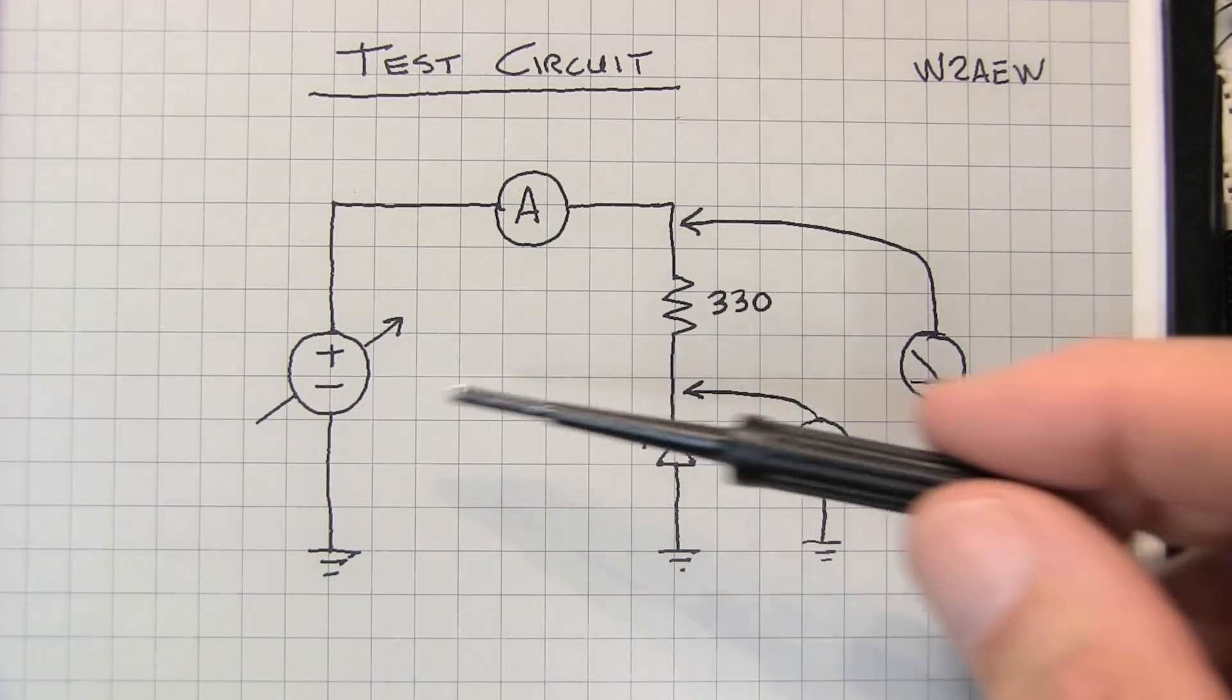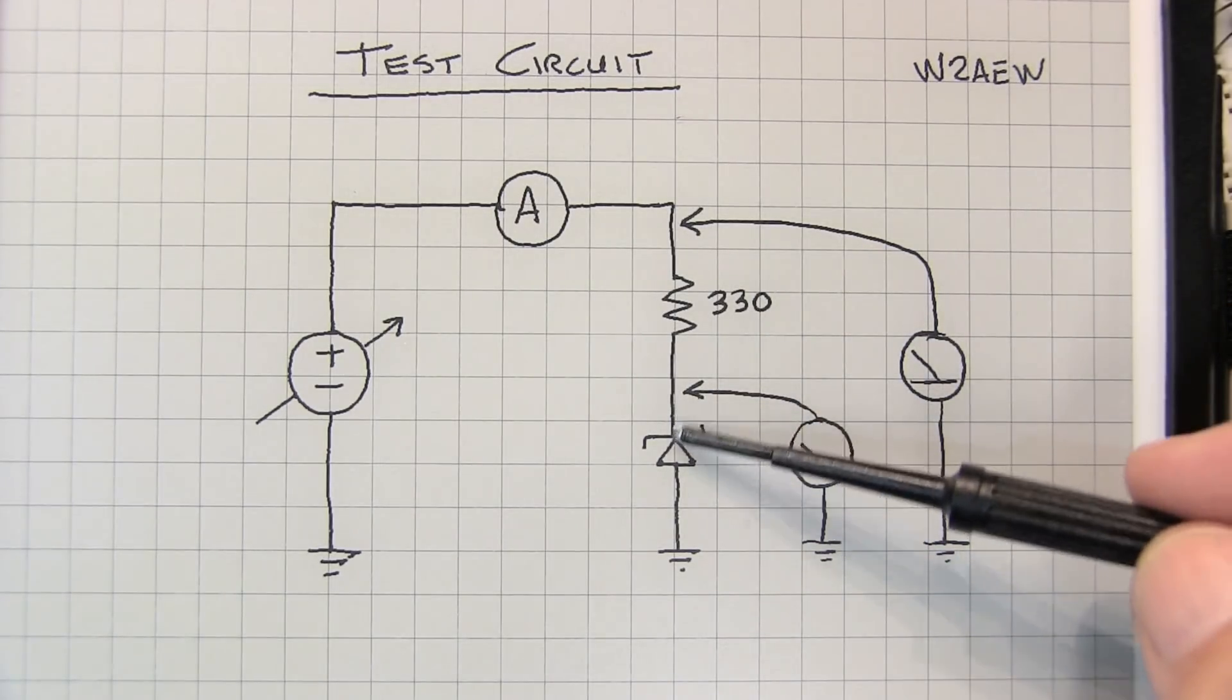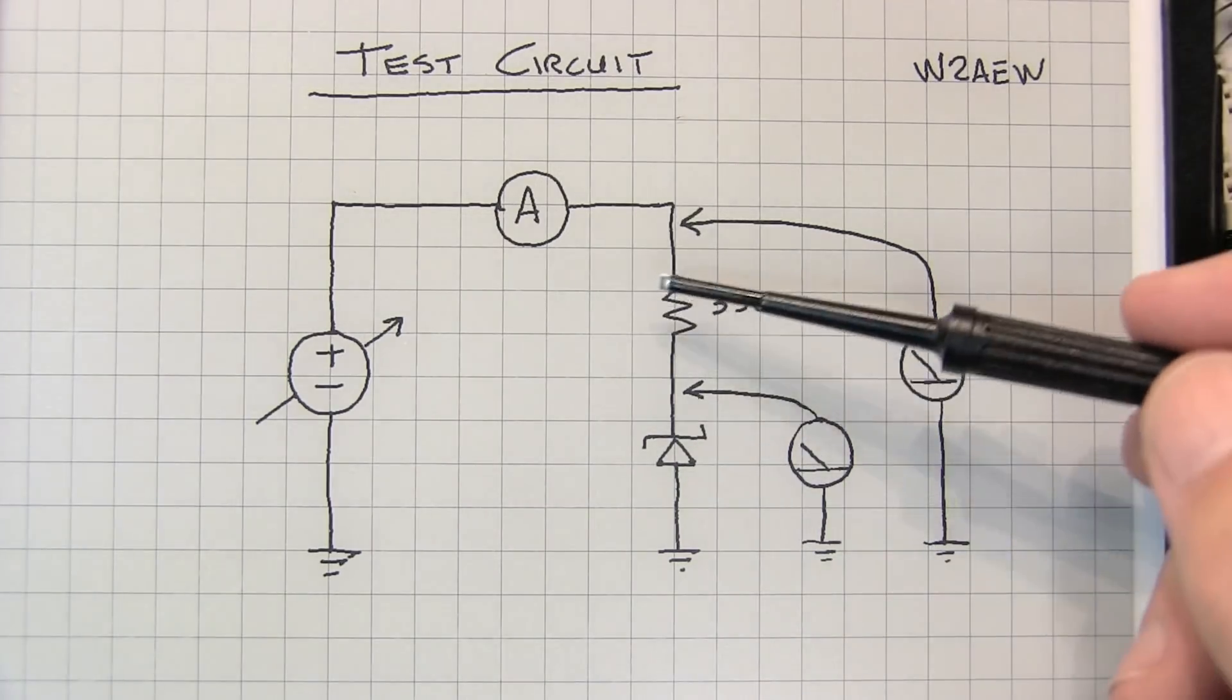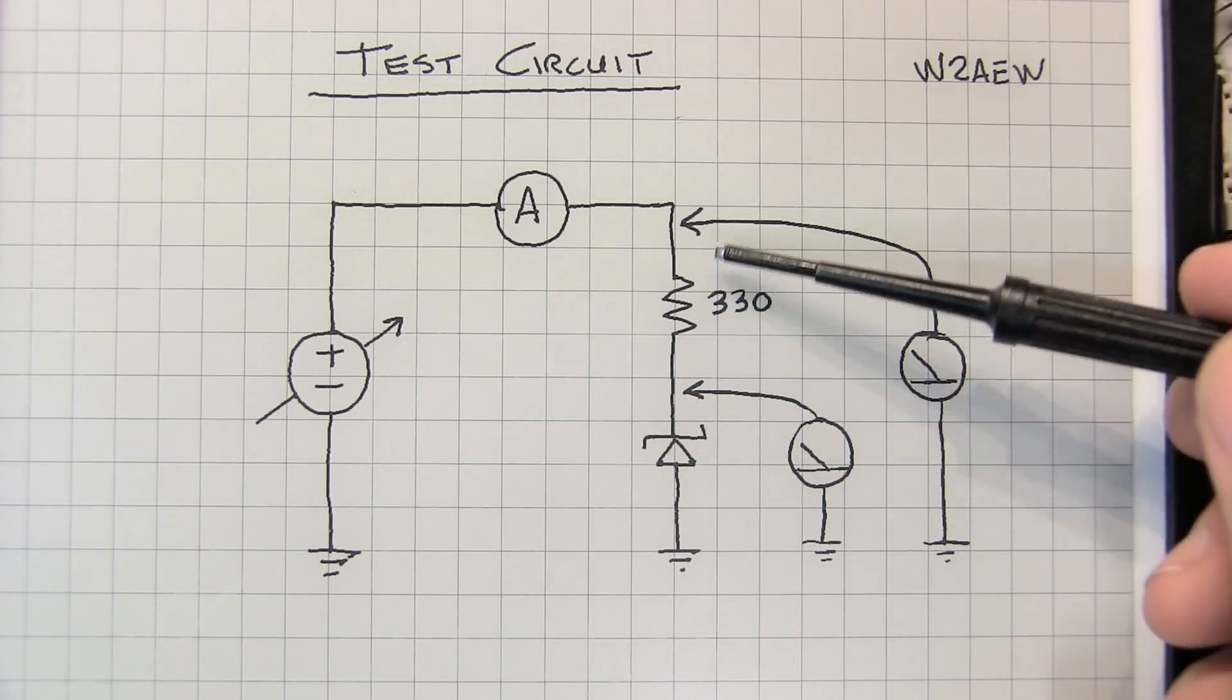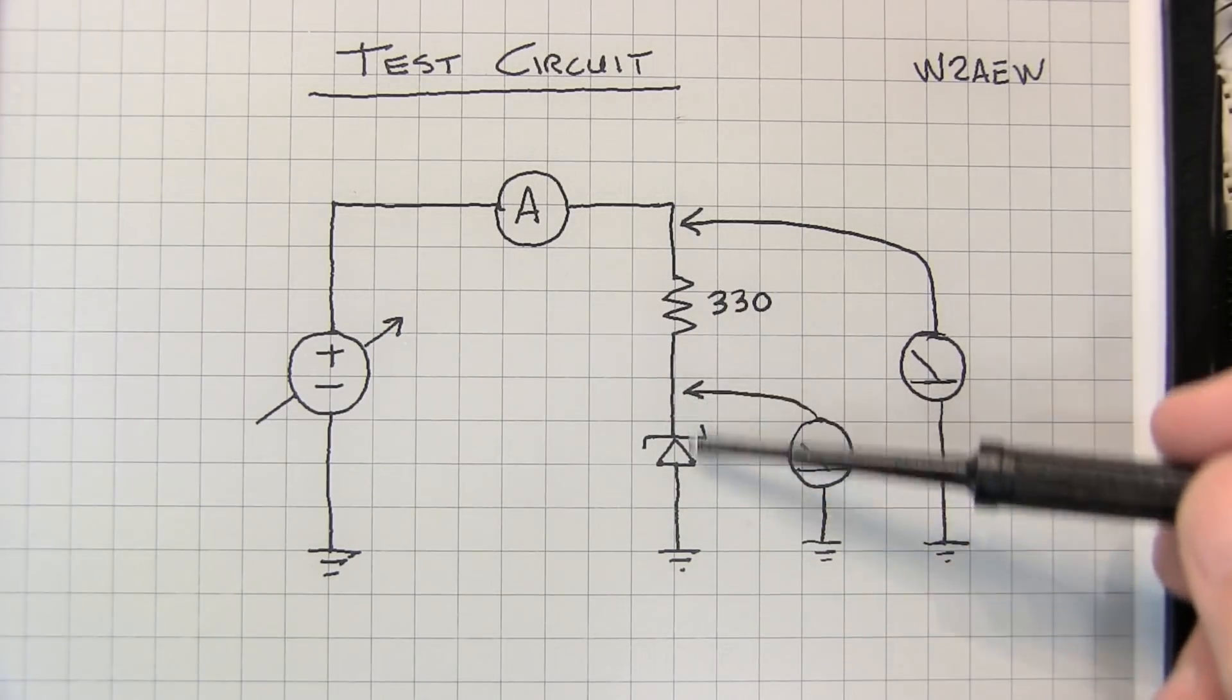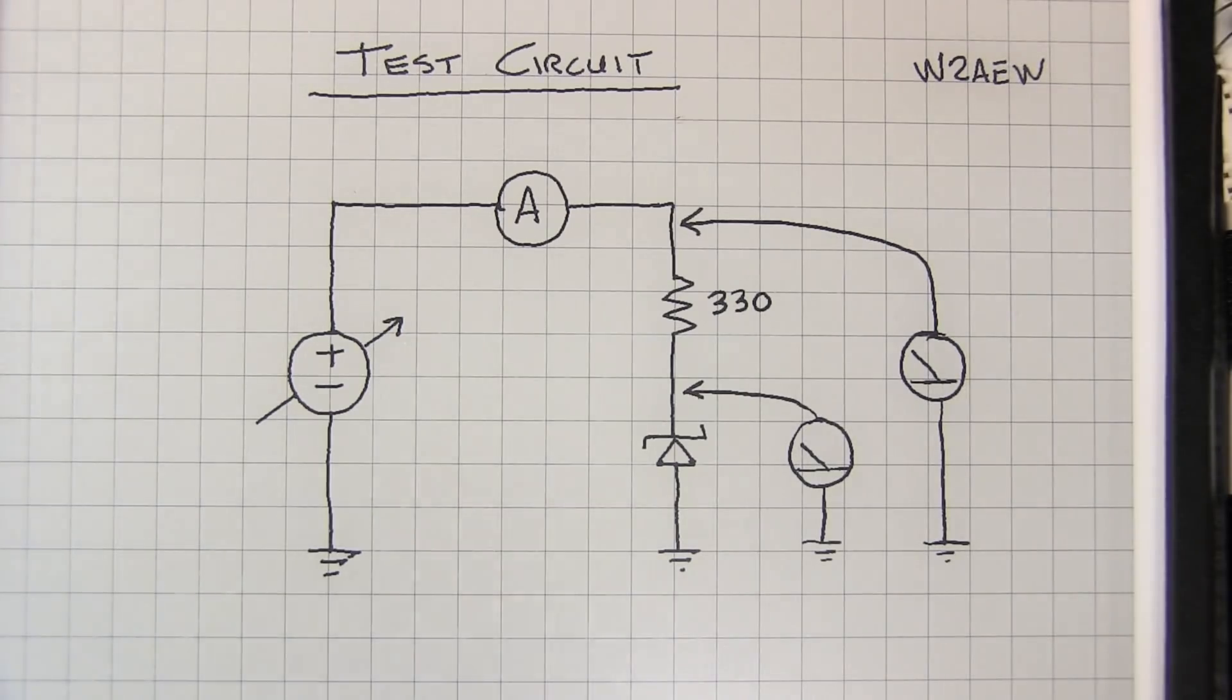What we expect to see is as we start cranking the voltage up, at low voltages these two voltages will match because there'll be very little current flowing through the diode. No current flowing through the resistor, and we're going to virtually measure the same voltage on either side. Once that diode turns on, we'll see this voltage start to stabilize, and the voltage across the 330 will increase. That indicates that clamping condition where we've crossed that knee in the IV characteristic.